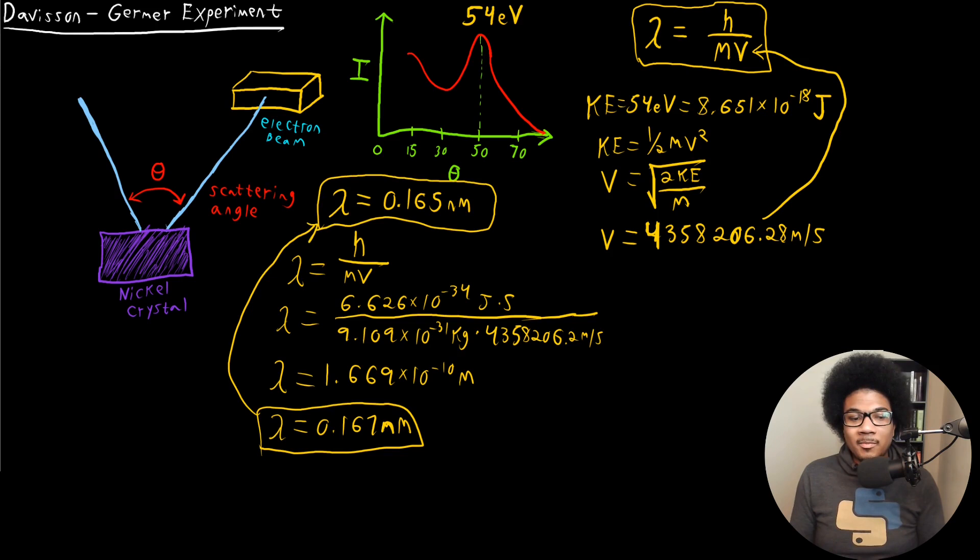The experimentally determined wavelength matches the prediction from the de Broglie wavelength equation. So what does this mean? Well, it provides experimental evidence for the underlying assumption of the de Broglie wavelength equation, which is that any moving particle has a wavelength.